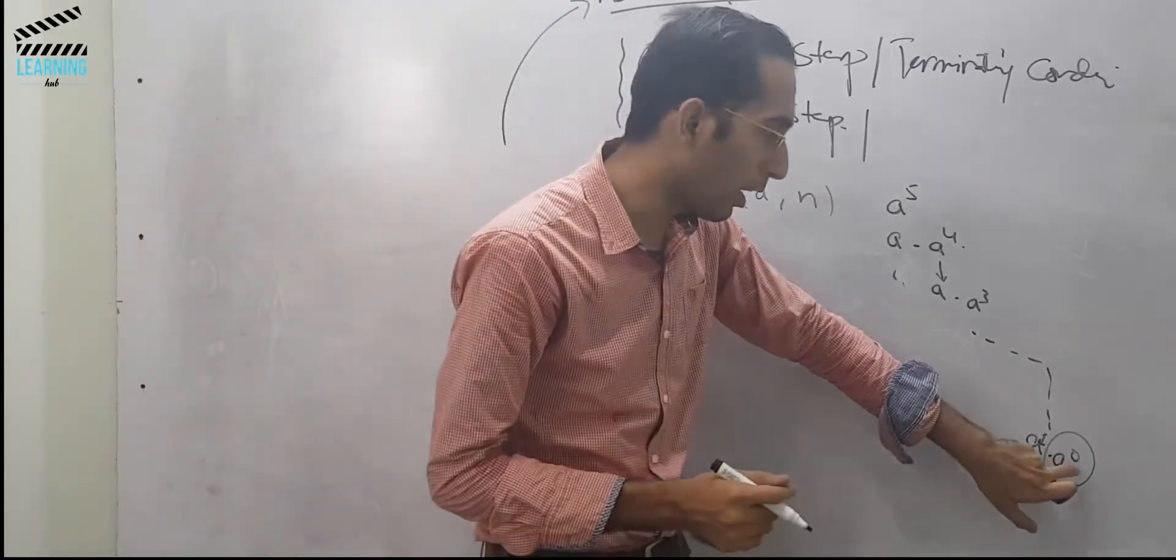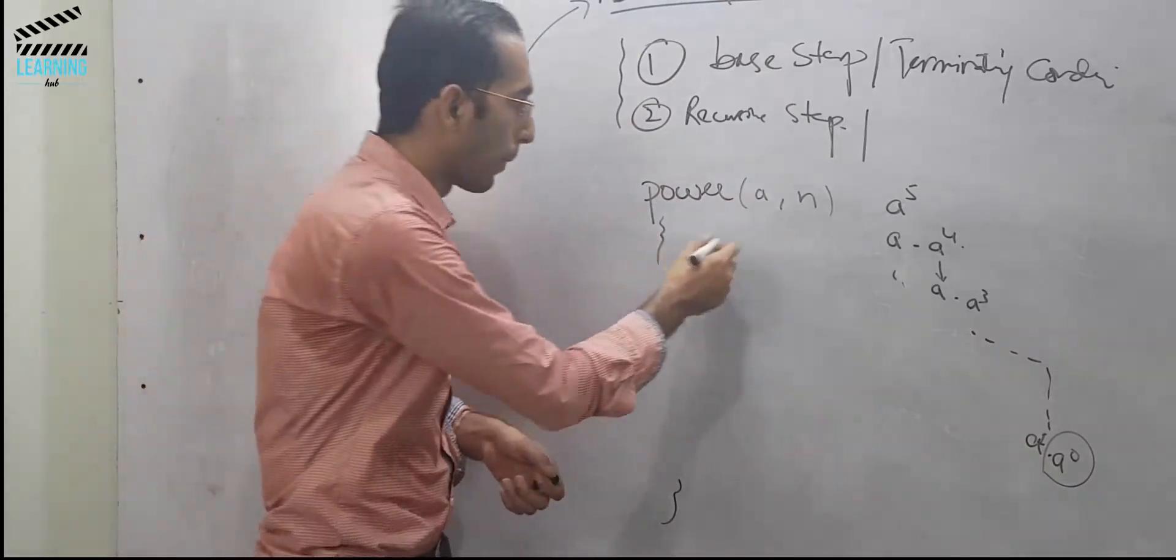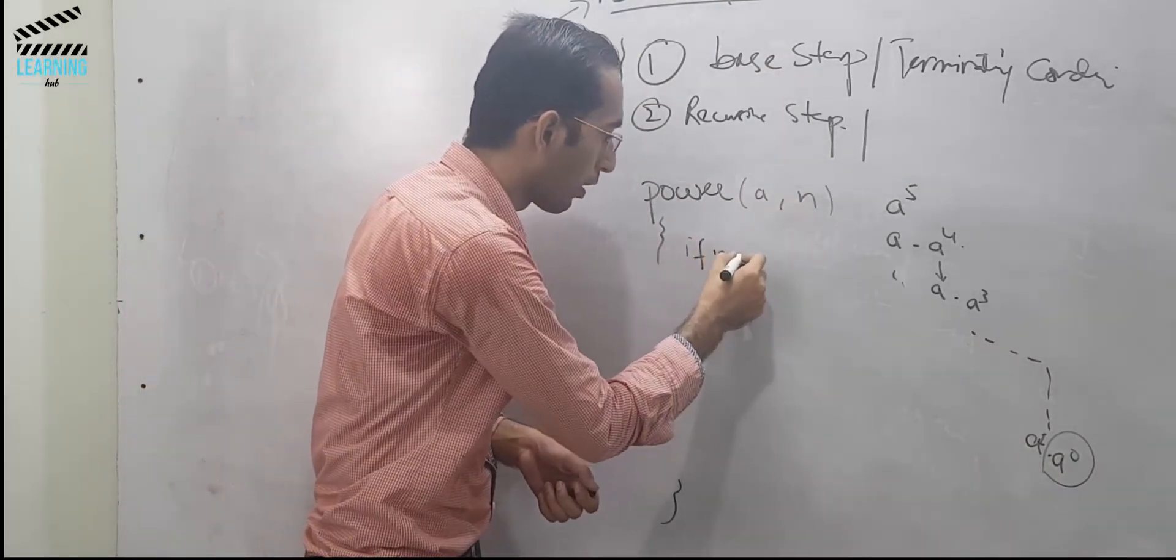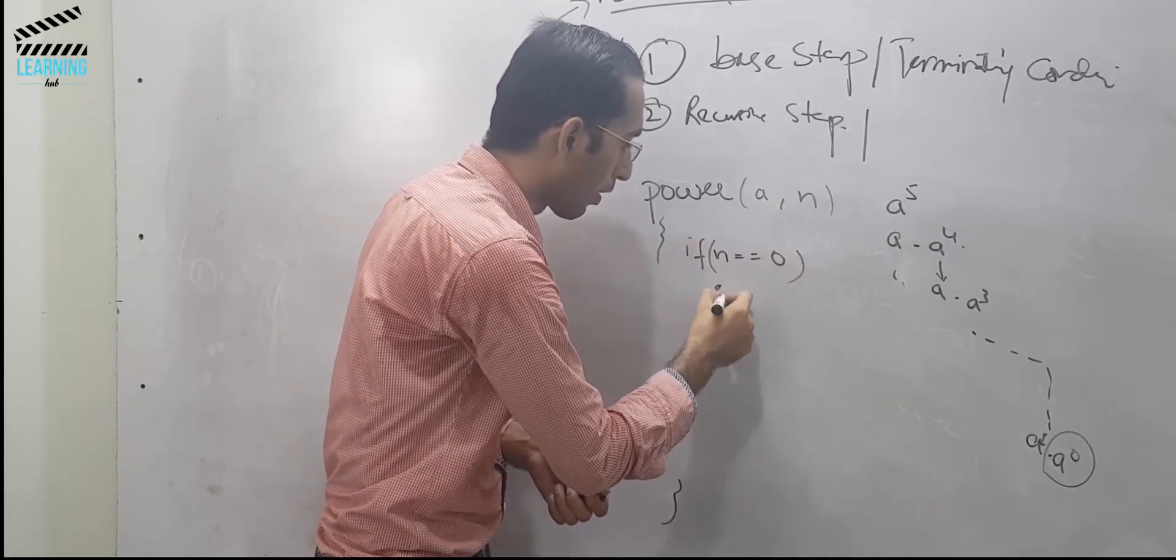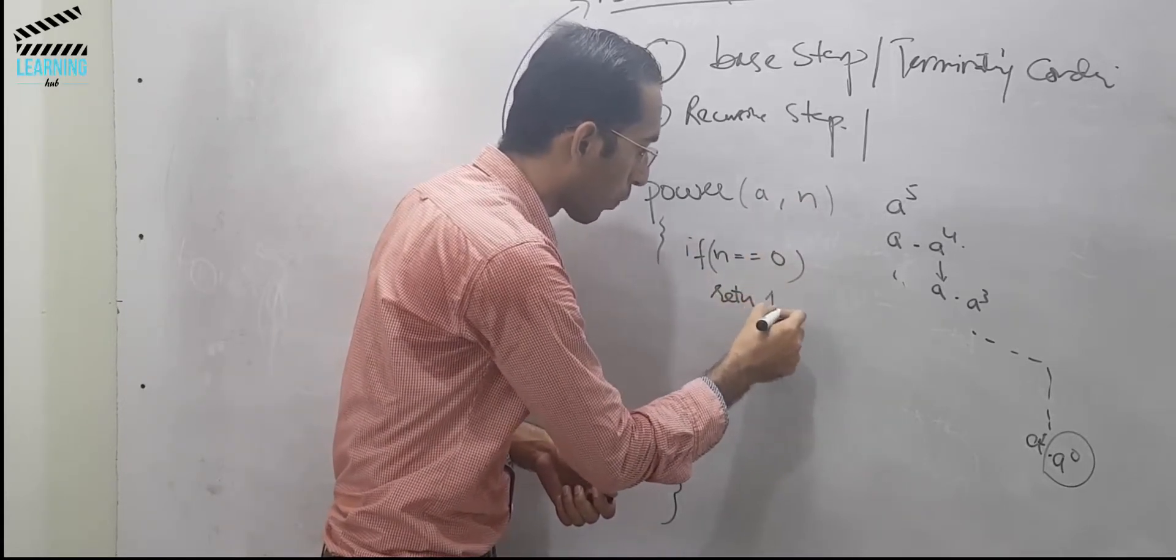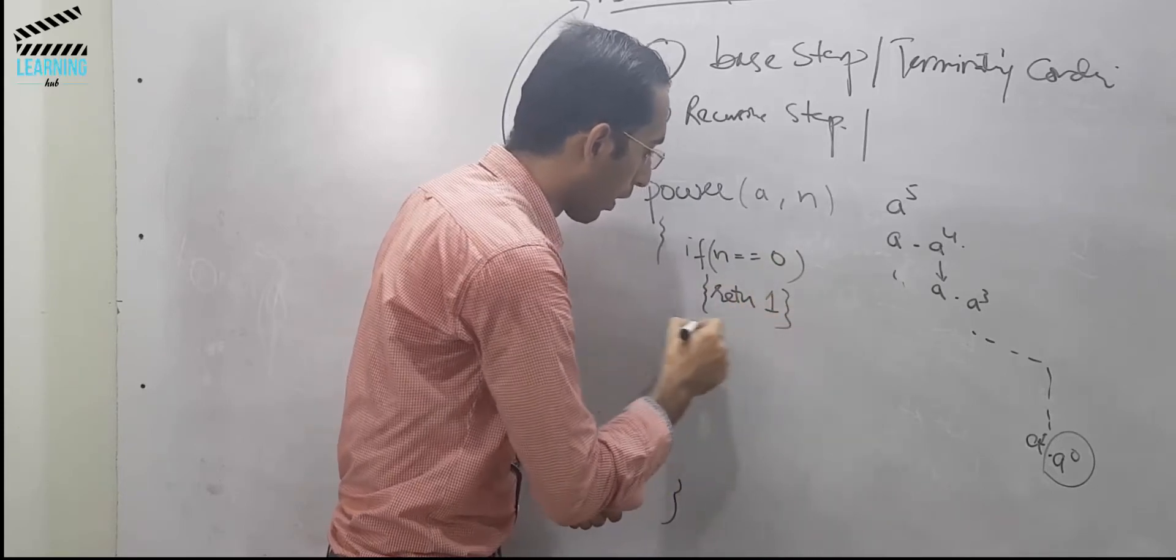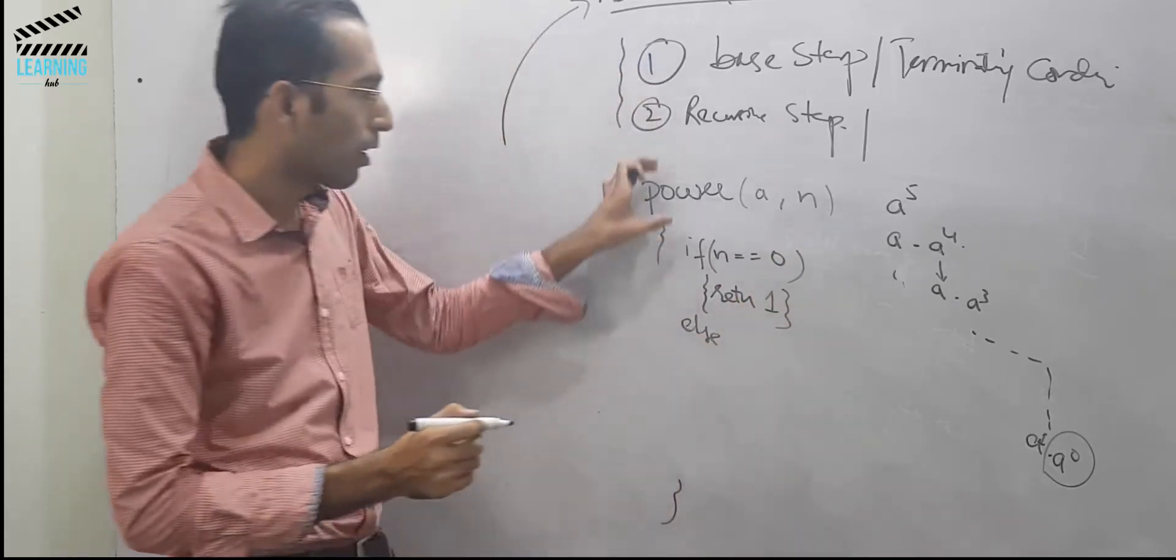The base step is if n is equal to 0, then return 1. Else,